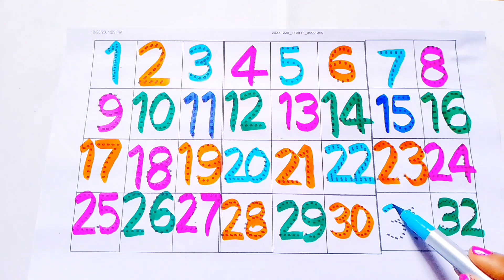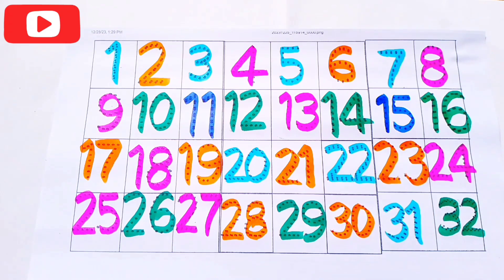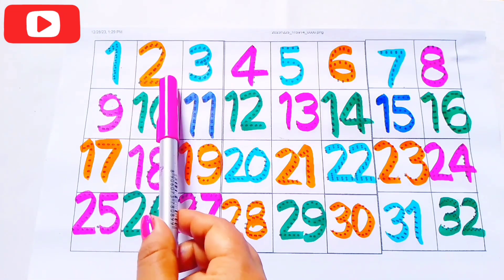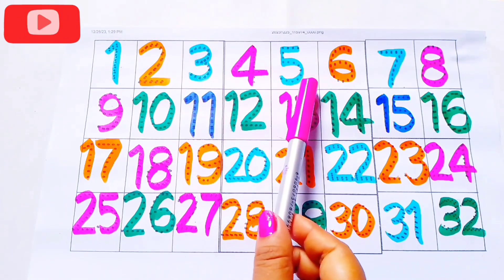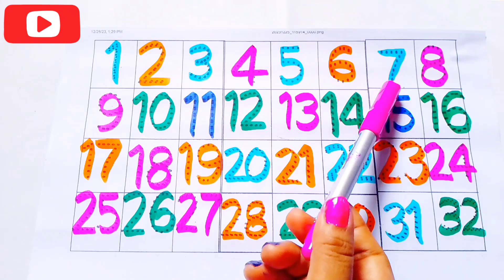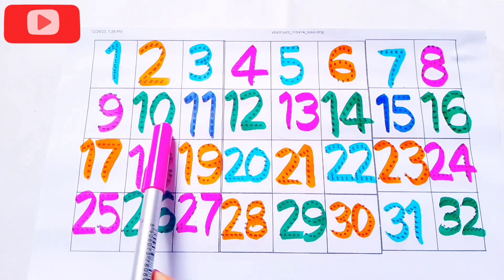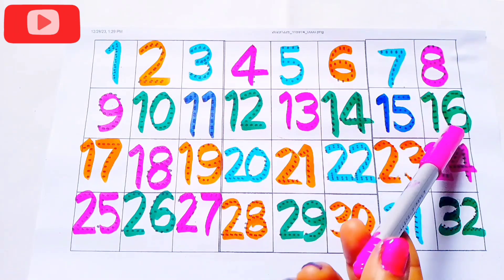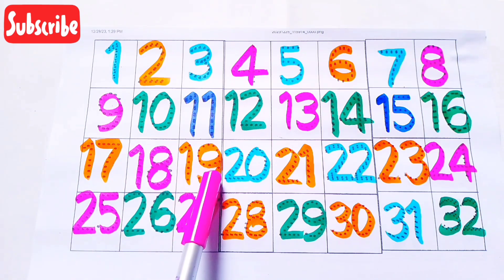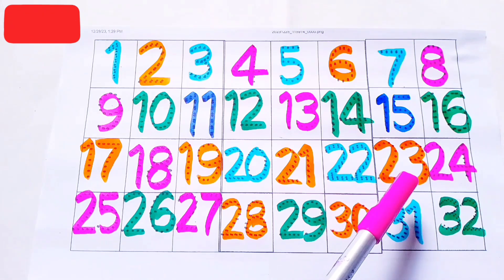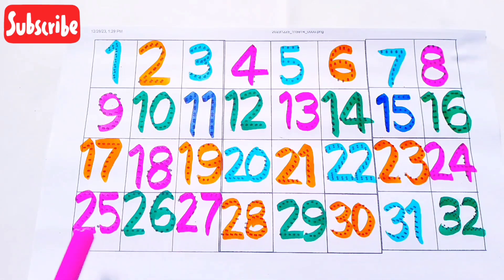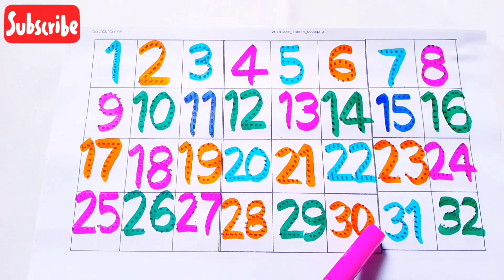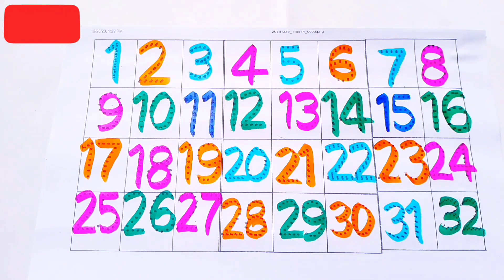Sky blue color 31, 32. Let's read: 1, 2, 3, 4, 5, 6, 7, 8, 9, 10, 11, 12, 13, 14, 15, 16, 17, 18, 19, 20, 21, 22, 23, 24, 25, 26, 27, 28, 29, 30, 31, 32.